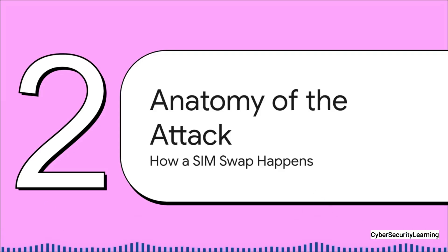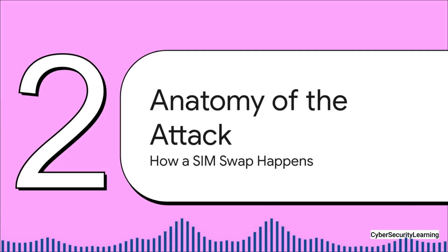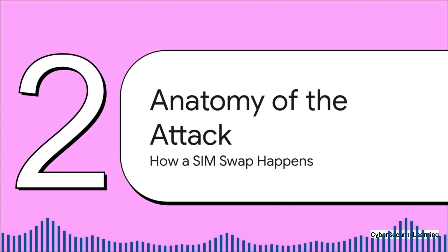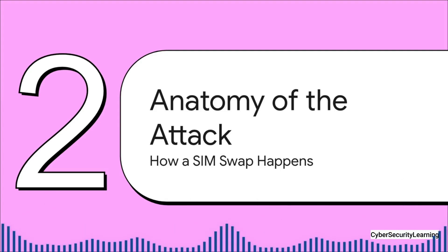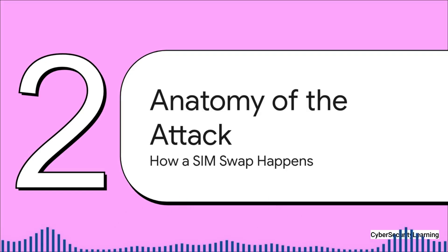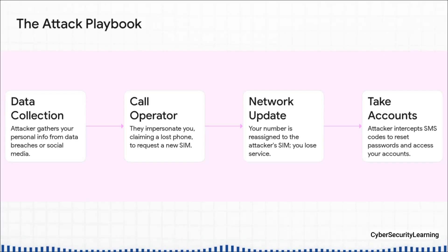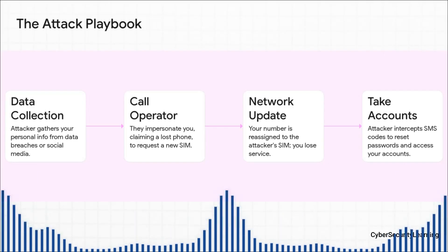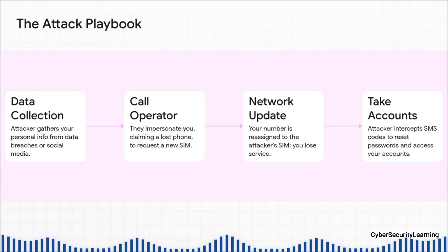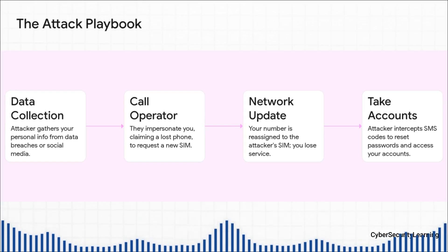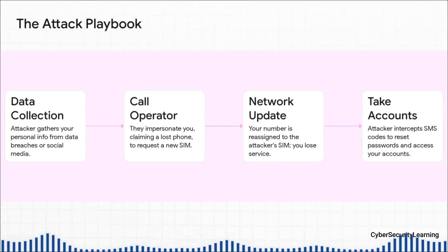So how do they actually pull this off? You might be picturing some super complex, high-tech hack, but the reality is it's not. It's a methodical process that relies more on exploiting human trust and using information that's already out there. The whole thing usually happens in four steps. First, they do their homework — data collection. They scrape your info from social media, or more likely buy it off the dark web from one of the many data breaches. They're looking for your name, birthday, address — anything to help them pretend to be you.